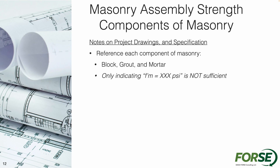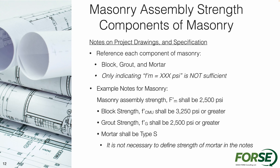On the project notes and specifications, we're going to define the block, grout, and mortar. We're not going to just put the assembly strength — we're going to actually define the properties of each of the different components of our masonry design. As a quick example, one thing you could put in your masonry design notes is an assembly strength of F'M of 2500 — which I think could be the average across the country. To do that, we need a block strength of at least 3250 or higher. We know our grout strength is also going to be 2500 or greater, matching F'M. The mortar is going to be type S, and it's not necessary to define the strength of the mortar — we just need to define the type. That would be a perfect example for what we could put within the masonry notes on a drawing.